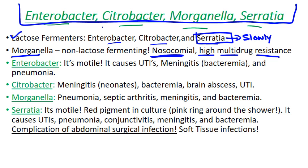Starting with Enterobacter: it is motile, so a motility test would be positive, which is one way to differentiate it from other Enterobacteriaceae. Like many organisms in this group, it's a major cause of UTIs and pneumonia. It's also a major cause of meningitis, particularly in neonates. Part of the reason for that is that it can go systemic — you may also see bacteremia as a result of Enterobacter.